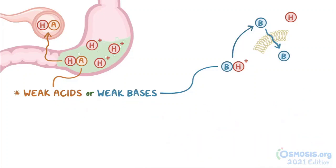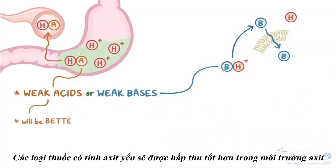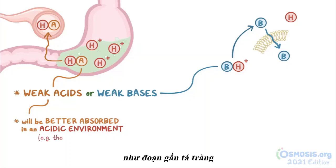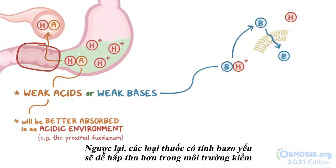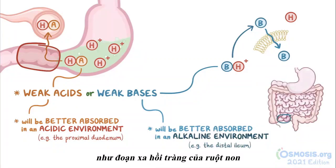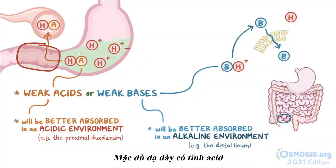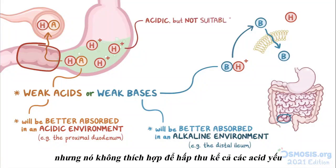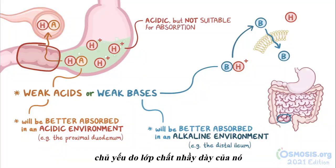In other words, weak acid medications can be better absorbed in an acidic environment, like the proximal duodenum, in contrast to weak basic medications which are more likely to get absorbed in an alkaline environment, like the distal ileum of the small intestine. Keep in mind that even though the stomach is acidic, it's not suitable for the absorption of even weak acids, mainly because of its thick mucus layer.